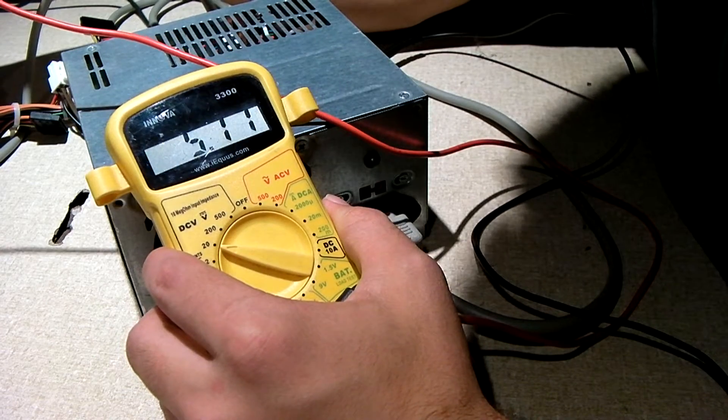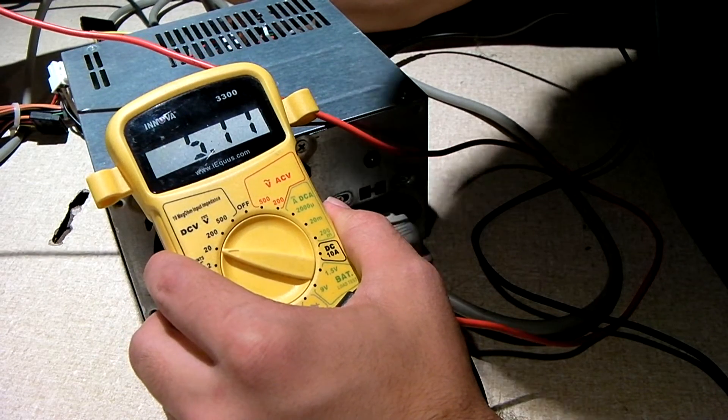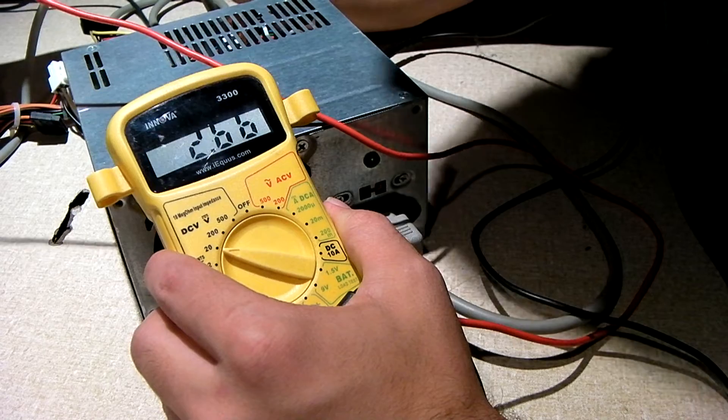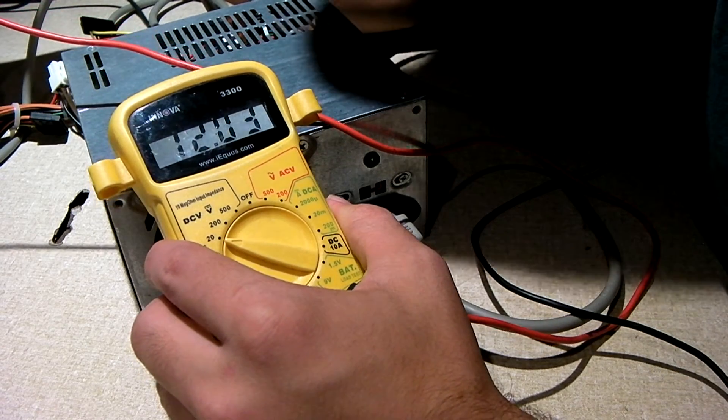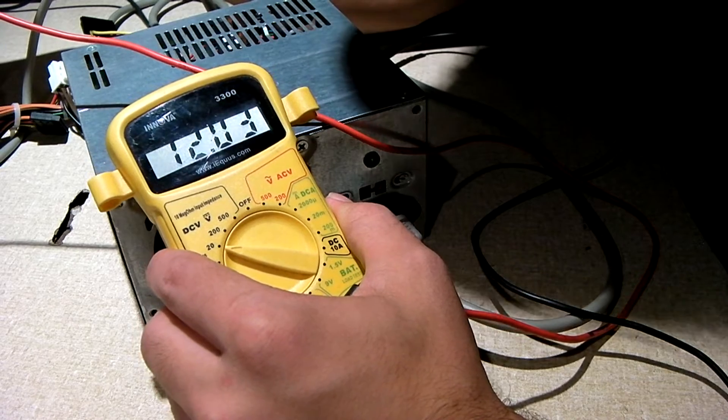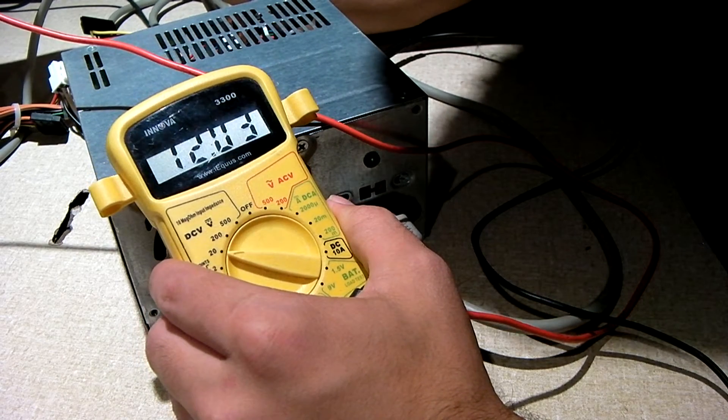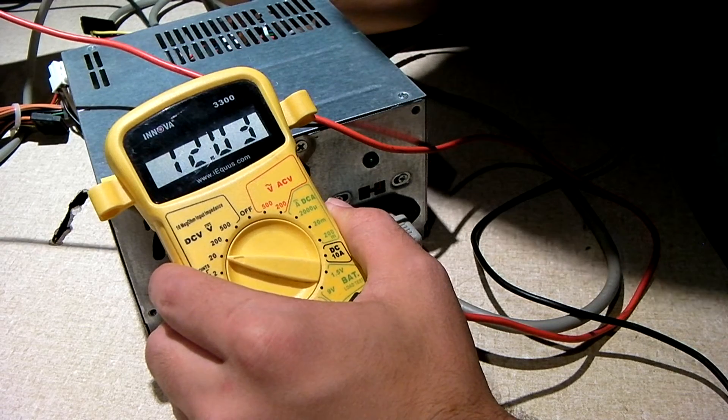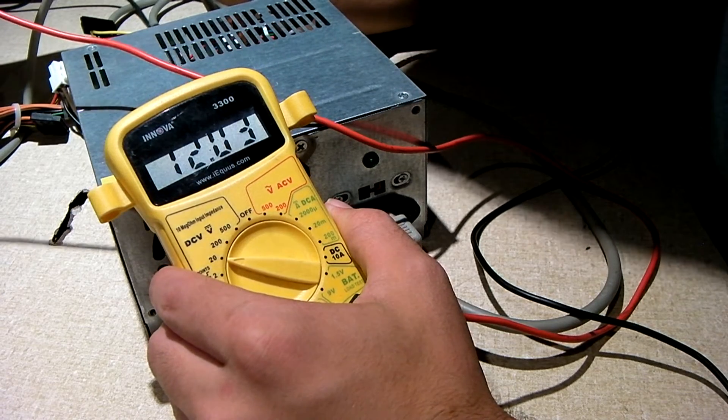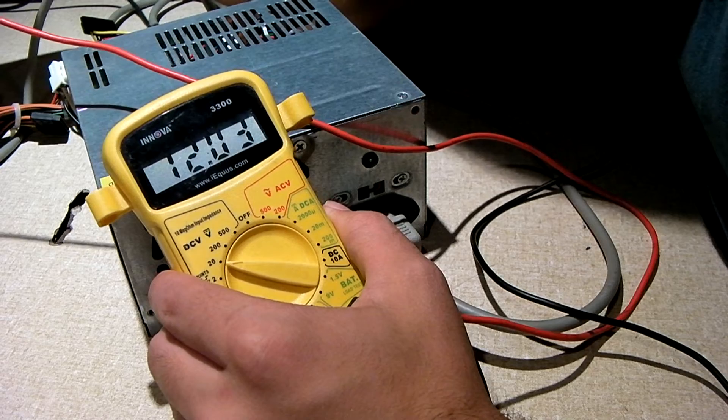Red gives us about 5.2. Now again, this power supply has no load on it other than its artificial load inside. 12 volts, the yellow wire, gives us 12.03. So, the orange is 3.3 volts. Red is 5 volts. Yellow is 12.